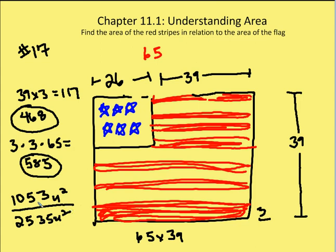Now we can reduce that 1,053 over 2,535 to 27 over 65. And that is the ratio, or the relationship, between the area of the red stripes over the area of the total flag.